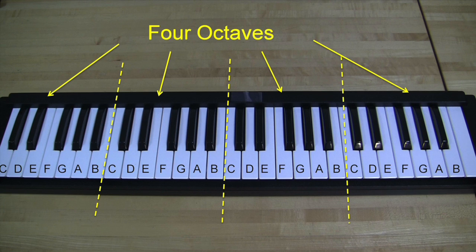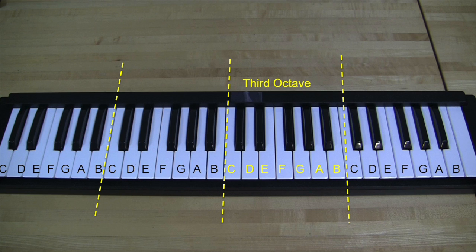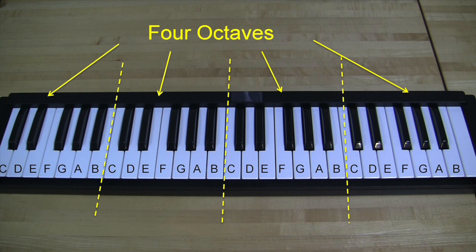As you tune one octave, the other octaves are tuned automatically. The keyboard that you'll be using has four octaves with frequency of each note doubling as you move from one octave to the next one.